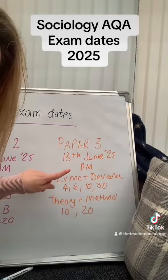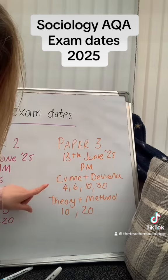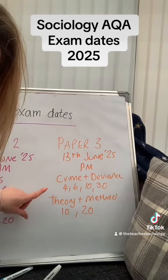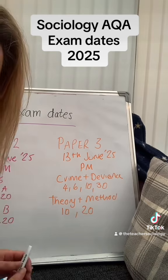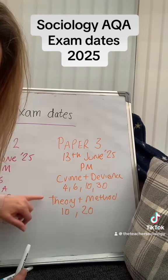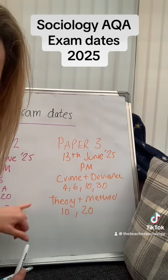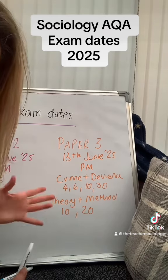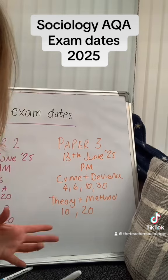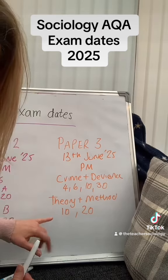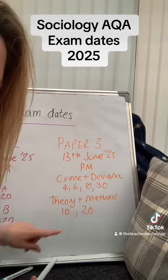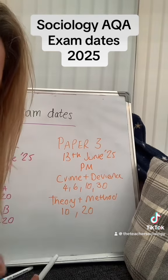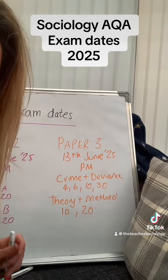Finally, we have Paper 3 — that is Crime and Deviance. You'll answer four questions: a 4, 6, 10, and a 30 marker. Then, like on Paper 1, you'll have Theory, Method, or even a debate — a 10 mark tackled the same way as Paper 1 — and a 20 marker as well.